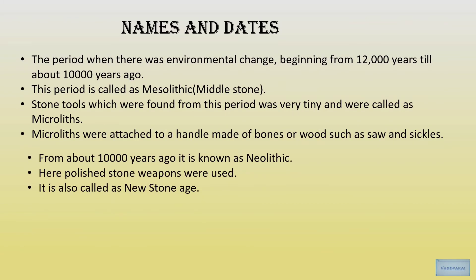The period of major environmental and climatic changes, from about 12,000 years to 10,000 years ago, is called the Mesolithic or Middle Stone Age. Stone tools were also found in this period but they were very tiny in structure, called microliths — micro meaning very small. These were attached to handles made from bones or roots to form tools such as saws or sickles. From about 10,000 years ago it is known as the Neolithic or New Stone Age, in which polished stone weapons were used.